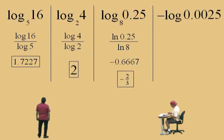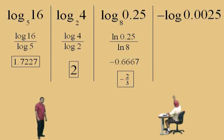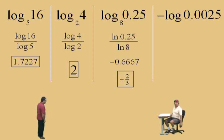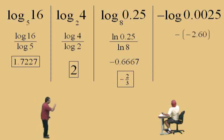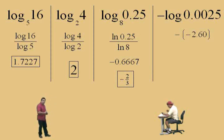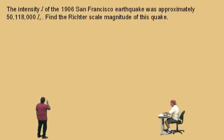Let's do one more: negative log of 0.0025. Do we need to apply the change of base rule here? No — because that is already a log base 10, and your calculator does log base 10, so there's no need to apply the change of base rule. Just put in log of 0.0025. Remember, it's a negative answer — Charlie gets negative 2.60, and the negative of negative 2.60 is 2.60. Now we're going to do a couple of word problems about earthquakes.